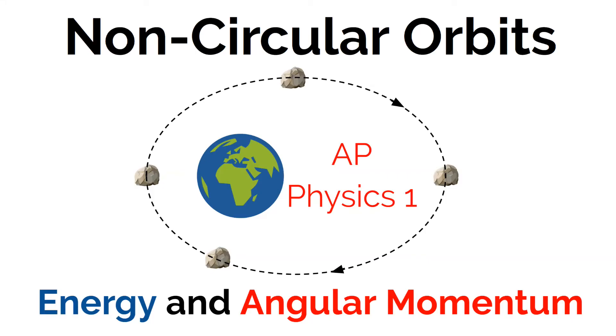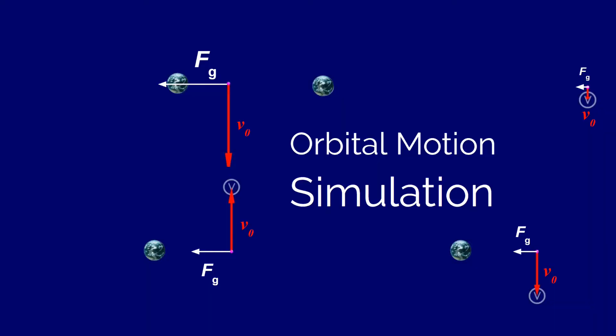Today we're going to talk about non-circular orbits and how we can explain what's going on with both energy and angular momentum. We're going to start by looking at four simulated orbital paths — the orbital motion that four different things undergo as they orbit a planet. This little purple dot represents a satellite or a moon moving in some path around the planet. This simulation approximates the gravitational attraction at a given distance and gives it some initial velocity.